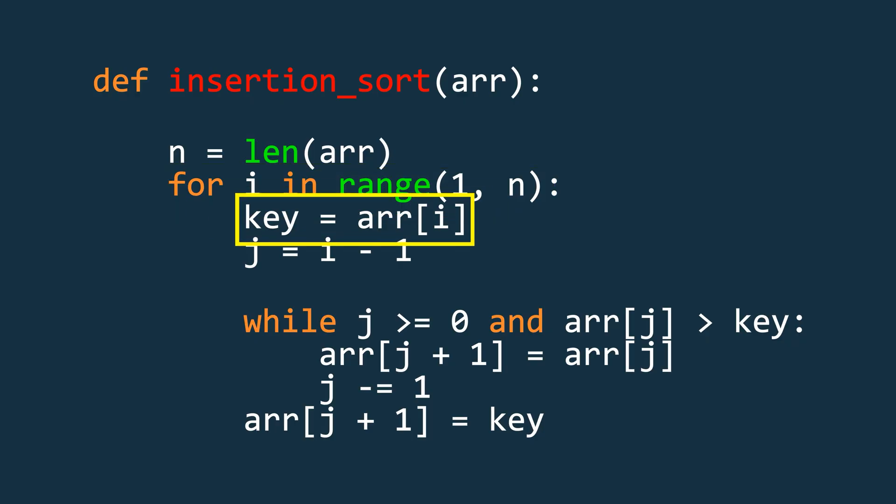Inside the loop, store the element at the current index in a variable. Then create another variable to store the index just before the current index which is i-1. After that, we need to do all the shifting.